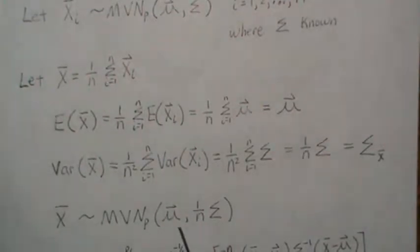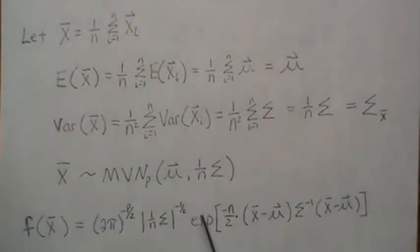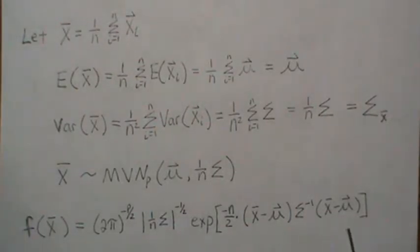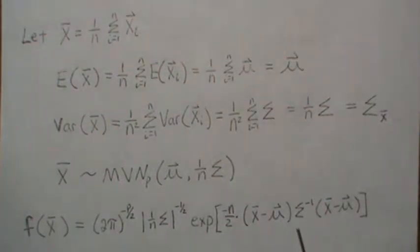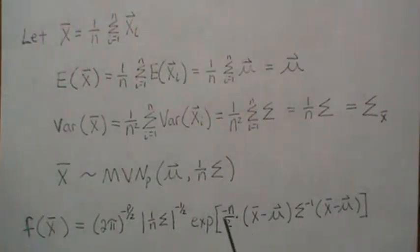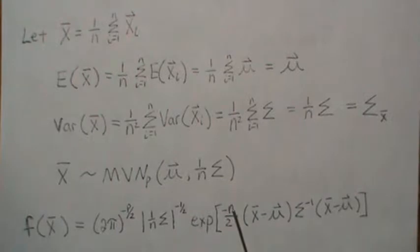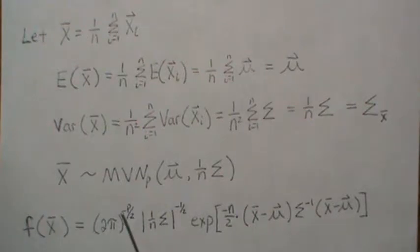So x bar is multivariate normal with mean mu and variance-covariance matrix sigma over n. Since it's multivariate normal, f of x bar can be written in multivariate normal form. This sigma inverse here can be thought of as sigma over n inverse, but n is a constant so it can be taken out front — the inverse of 1 over n is n — and that's why it goes to the numerator. This is the determinant to the minus p over 2 power.